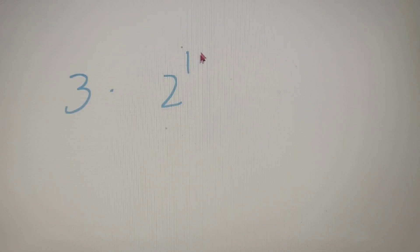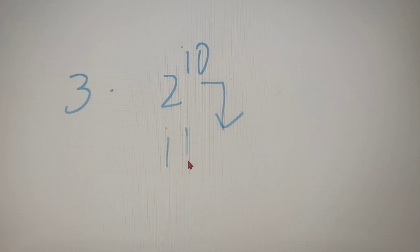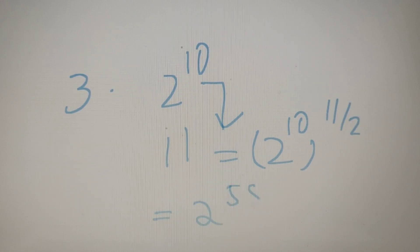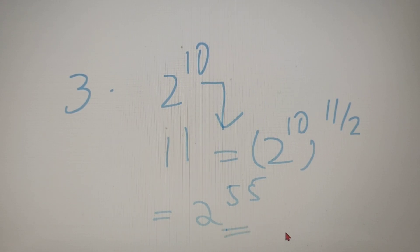For our third example, we have to calculate the product of factors of the number 2 to the power 10. Now 2 to the power 10 is already in its prime factorized form, so the number of factors is equal to 11. Therefore, the product of factors of 2 to the power 10 is equal to (2 to the power 10) to the power 11 by 2, which is equivalent to 2 to the power 55. So the product of factors of 2 to the power 10 is equal to 2 to the power 55.